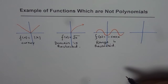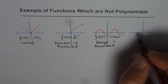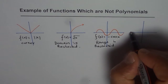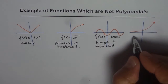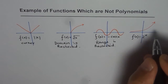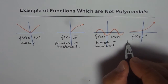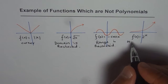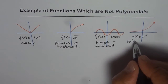Other functions that are not polynomials include exponential functions. For example, f(x) = 2^x. Here we have a horizontal asymptote. Polynomials do not have horizontal or vertical asymptotes.